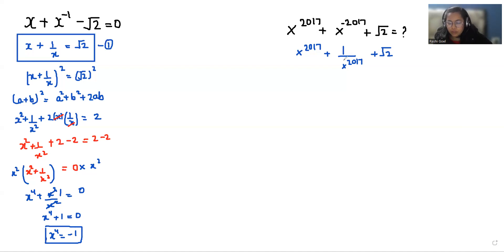Now I'm going to solve this. We can write x power 2017 as x times x power 2016 plus 1 over x times x power 2016 plus root 2. Now x power 2016 we can write as x power 4 times 504, and we have the value of x power 4, that is minus 1, so minus 1 power 504. As we can see, the power is an even number, so the minus 1 becomes plus 1. So in place of x power 2016, we can write 1.